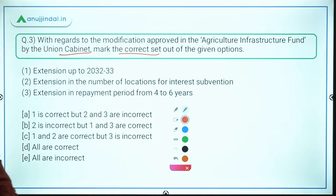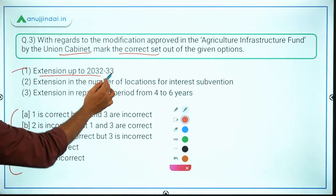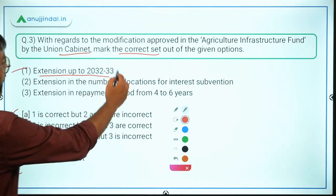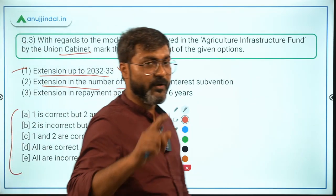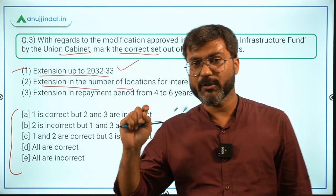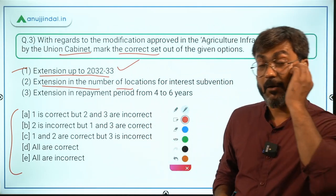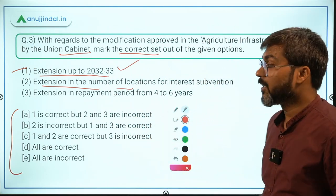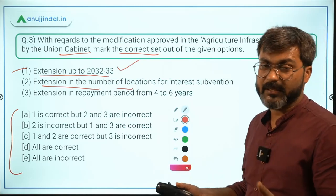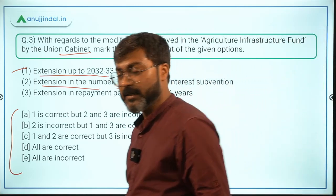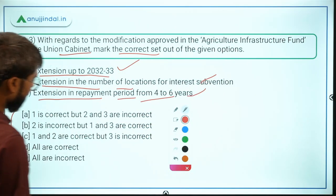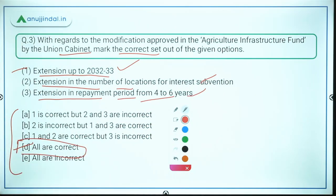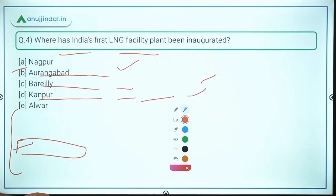Coming back to question 3: extension up to 2032–33 is correct; extension in the number of locations for interest subvention is correct; and extension in the repayment period from 4 to 6 years is correct. So all statements are correct, which means Option D — All are correct — is the right answer.